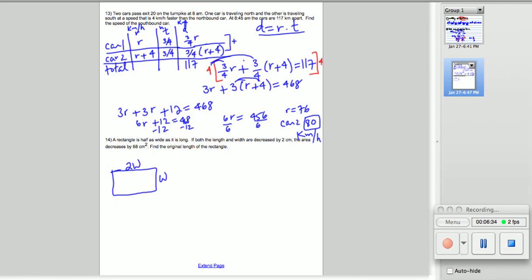Now, they said if both, so this is the original rectangle. Now, if both the length and the width are decreased by 2. So, we have a shorter width and a shorter length. They're both decreased by 2. Then the area decreases by 68 centimeter squared.